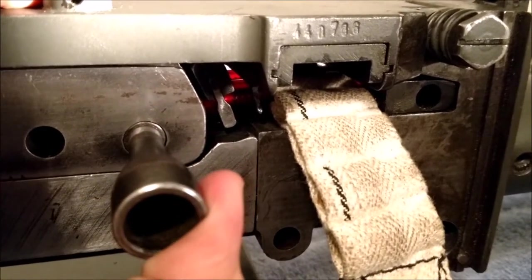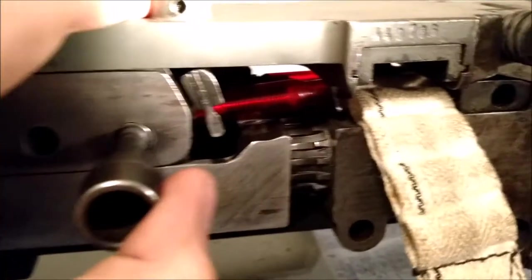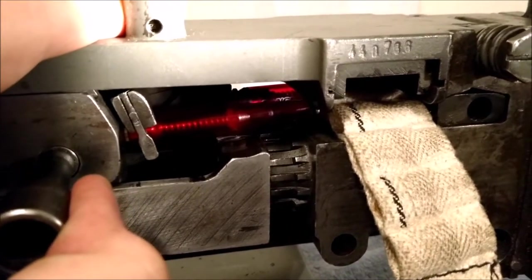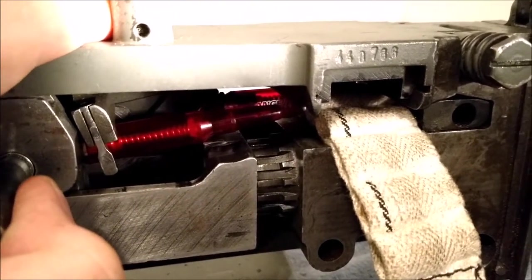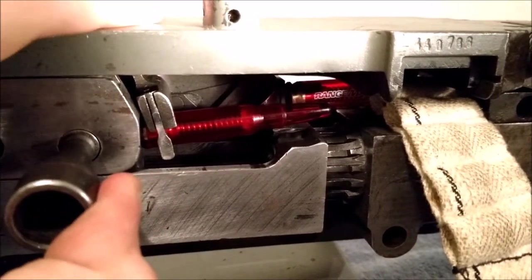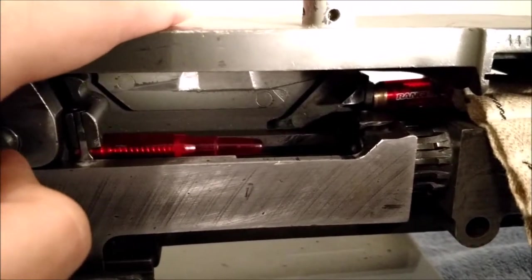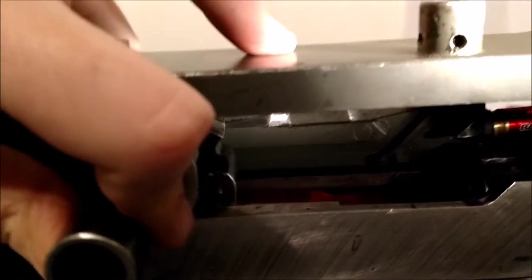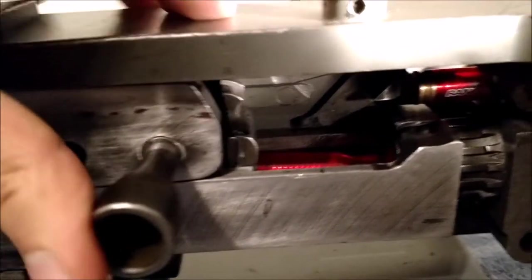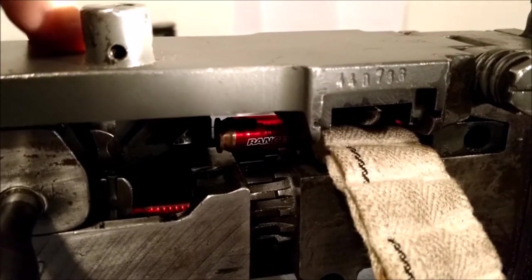So as the barrel and barrel extension recoil with the bolt, it starts to pull the first round out of the belt. It also gets unlocked. The slide and feed pawl move to grab the next round, and the extractor starts to pull the current round lower until it starts to go into the T slot.